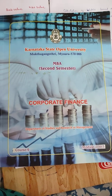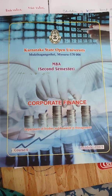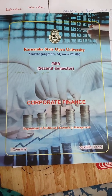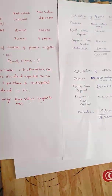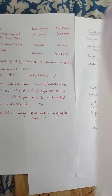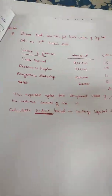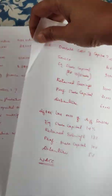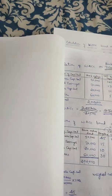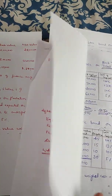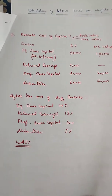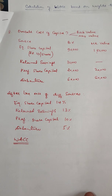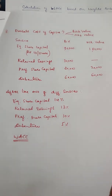Hello friends. This is a Corporate Finance Second Semester MBA case. WACC is one problem — you guys have a problem solved. This is the overall cost of capital and the weighted average cost of capital. This problem is solved in the video.